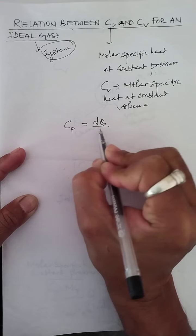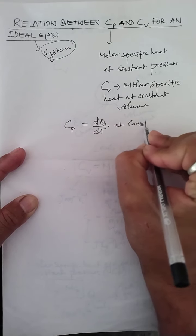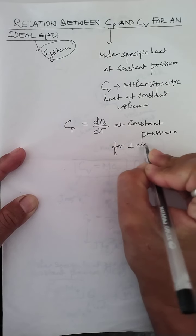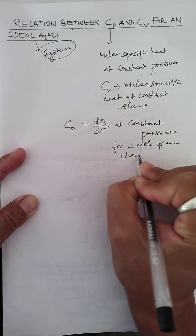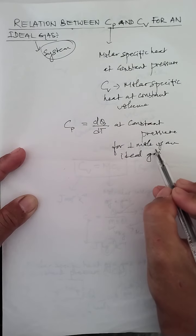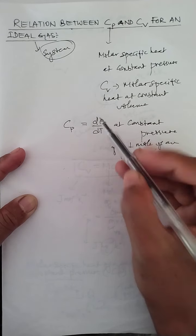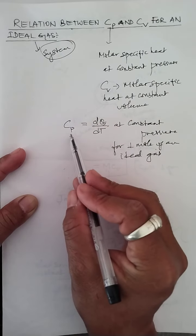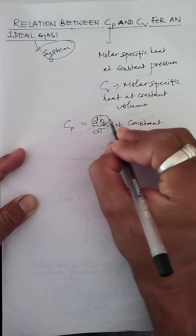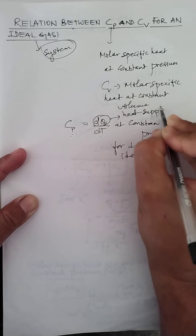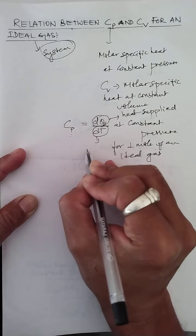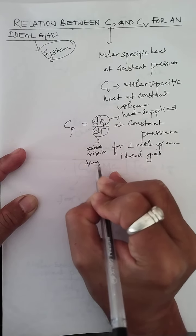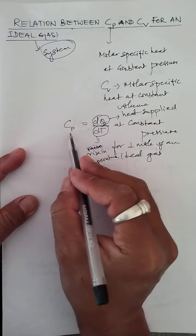Cp, as per the definition, can be written as dQ/dT at constant pressure, for one mole of an ideal gas. So for one mole of an ideal gas, the amount of heat energy required to raise the temperature through one degree Celsius or one Kelvin at constant pressure is defined as Cp. Numerically, Cp = dQ/dT, where dQ is the heat supplied and dT is the rise in temperature.